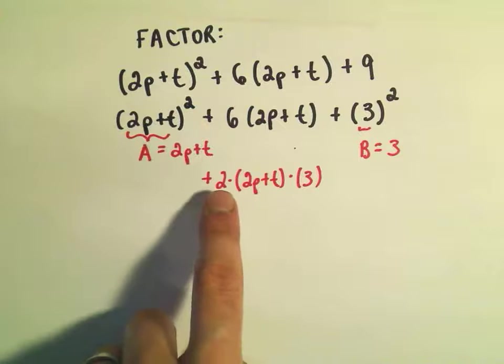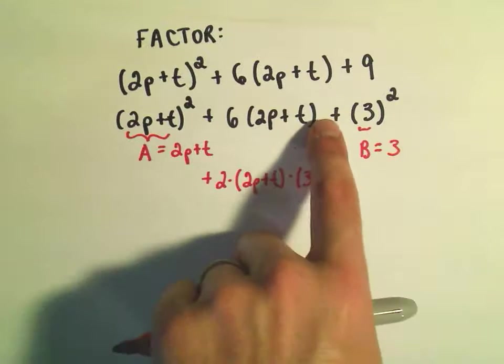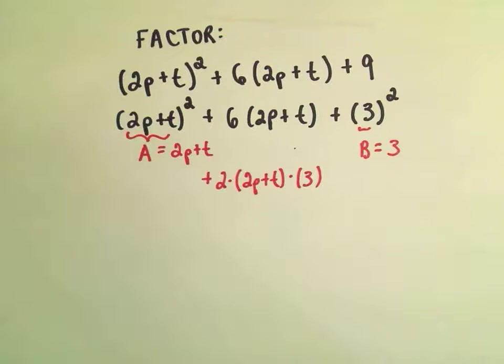a squared plus 2ab plus b squared. So it says we can simply factor that now.